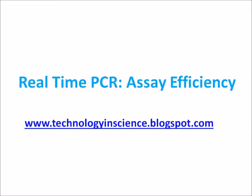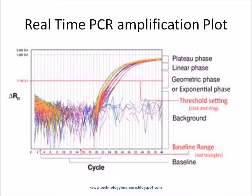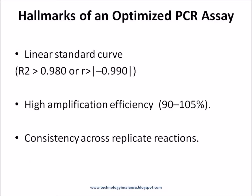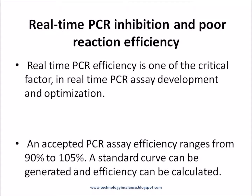The hallmarks of an optimized real-time PCR assay are a linear standard curve, high amplification efficiency, and consistency across replicates. Real-time PCR efficiency is one of the critical factors in assay development and optimization. A 100% efficient PCR result indicates a well-optimized assay, while below that indicates a need to further optimize reaction parameters, which includes primer and probe concentration.